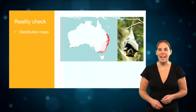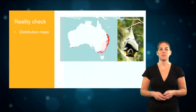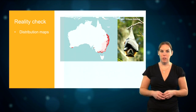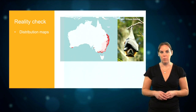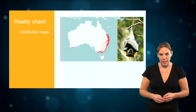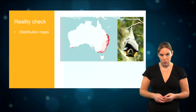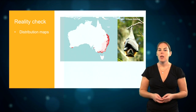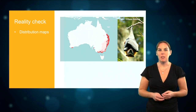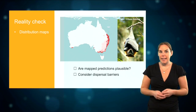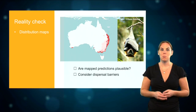Let's start with looking at the map with the predicted distribution of your species. We suggested doing a bit of research on your species before you design your species distribution model, so you should have some idea what the likely distribution of your species is. When you look at the map produced by the species distribution model, you should critically evaluate whether the predicted distribution is plausible, while taking into account factors such as dispersal barriers.